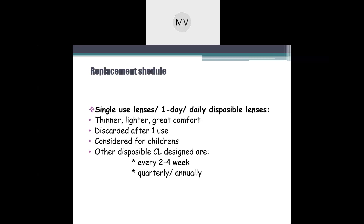According to replacement schedule, lenses are classified as single-use or daily disposable lenses. The advantages of daily disposable lenses are that they are thinner, lighter, and provide greater comfort. They are discarded after one use and are suitable for children. Other disposable designs include every two to four weeks (bi-weekly) or monthly.